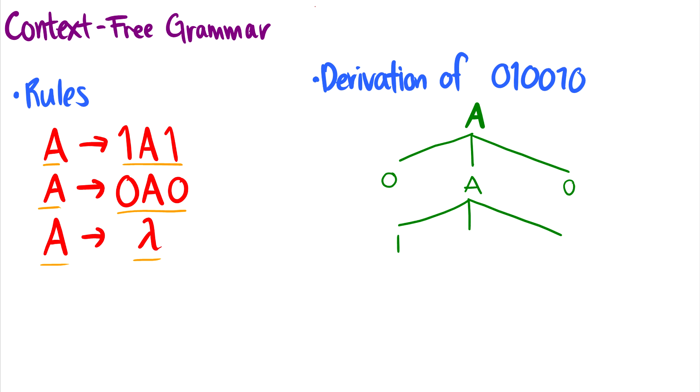So now A goes to 1A1. And now I need to get the zeros on the inside, so we can use A goes to 0A0 again. And now we're left with 0A0. And now if we look across the side of our tree, we have 010010.